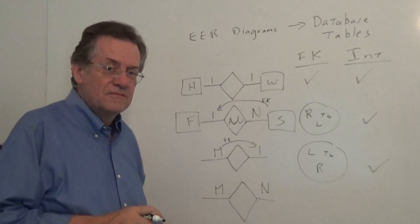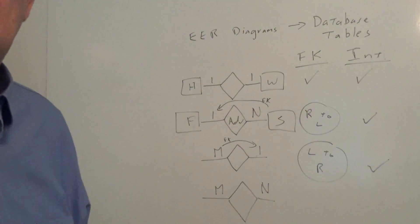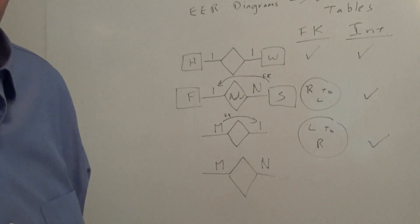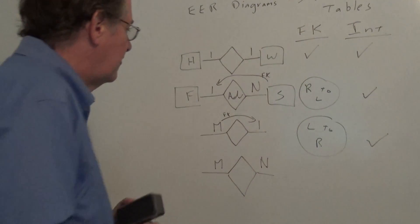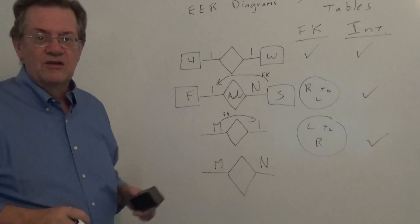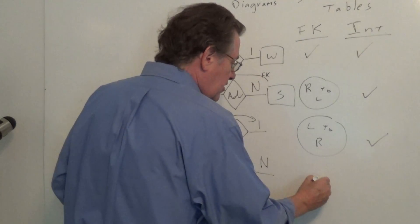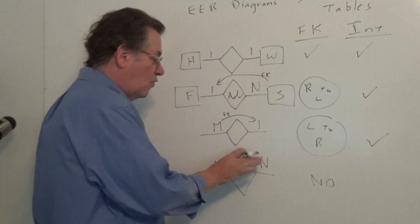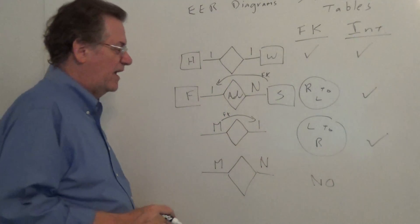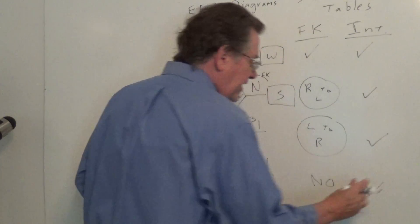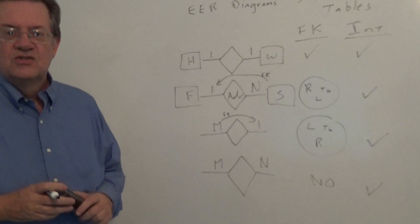Finally, down below here, finally down below, we have the many to many relationship. In this case, can we have a foreign key? No, because there's no one on the other side. We would have to use an intermediate table.